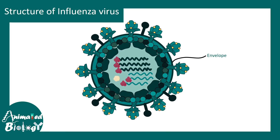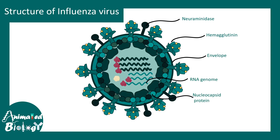Let us look at the viral particle and its structures in a bit more detail. The envelope is generally derived from the host cell. Hemagglutinin helps the virus attach to specific cell surface receptors. Neuraminidase helps to release the virus from a newly infected cell. There are RNA genome segments, nucleocapsid proteins, matrix proteins, and many RNA polymerases used to make new proteins and replicate the genome.